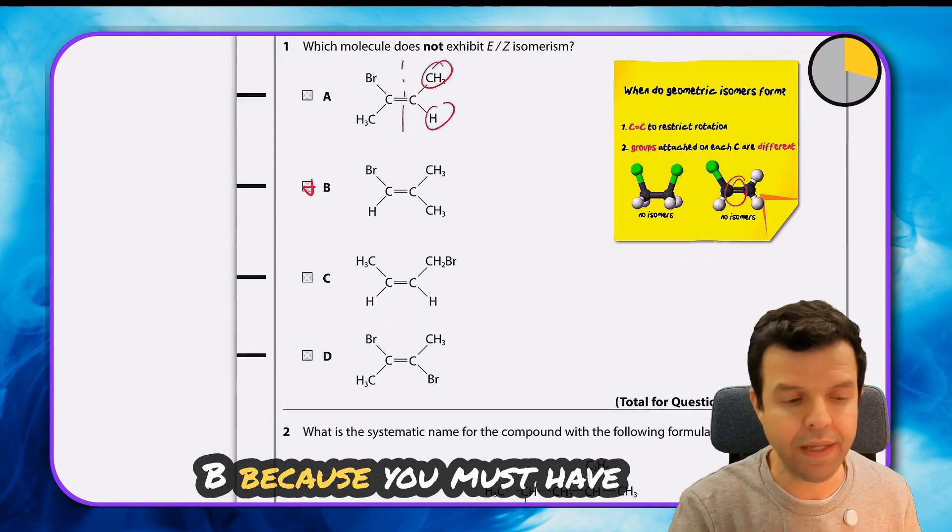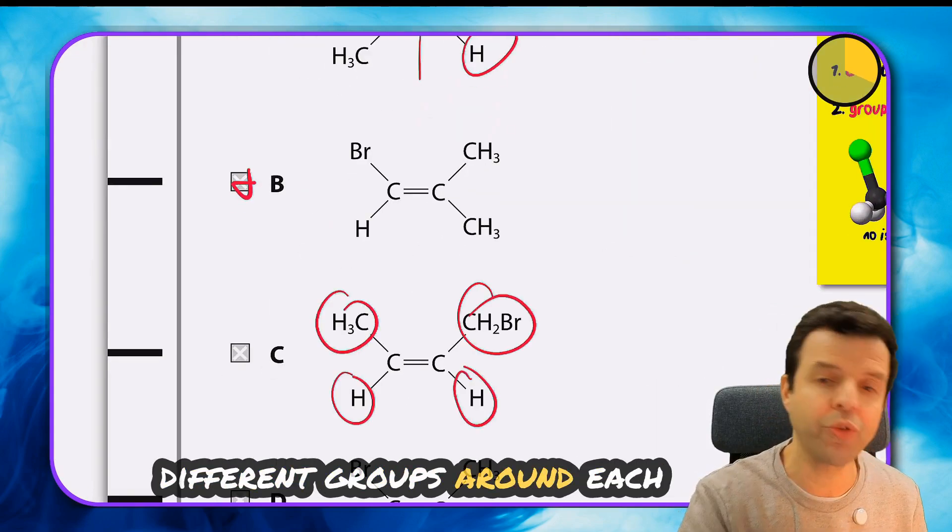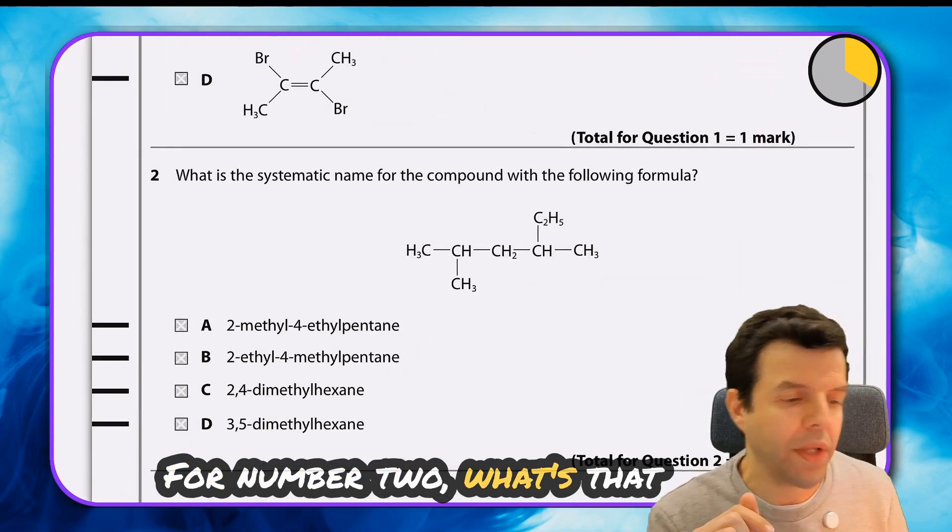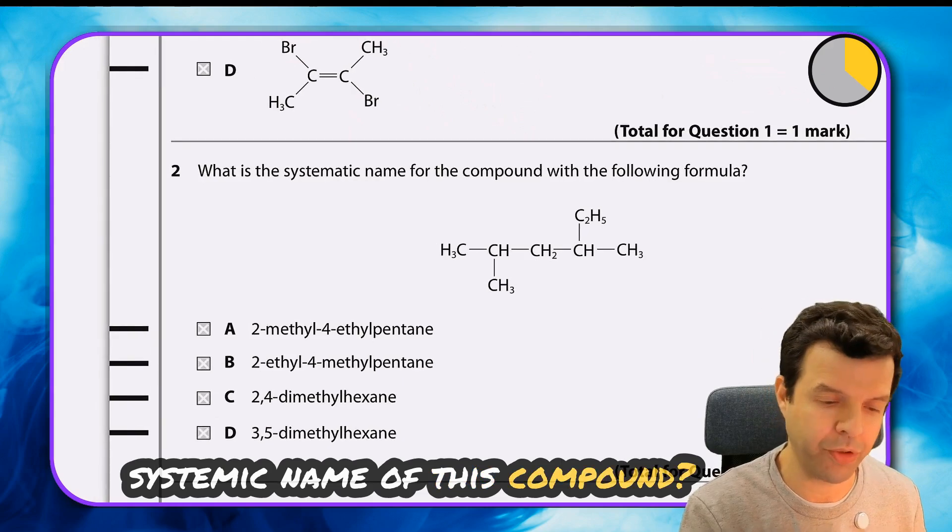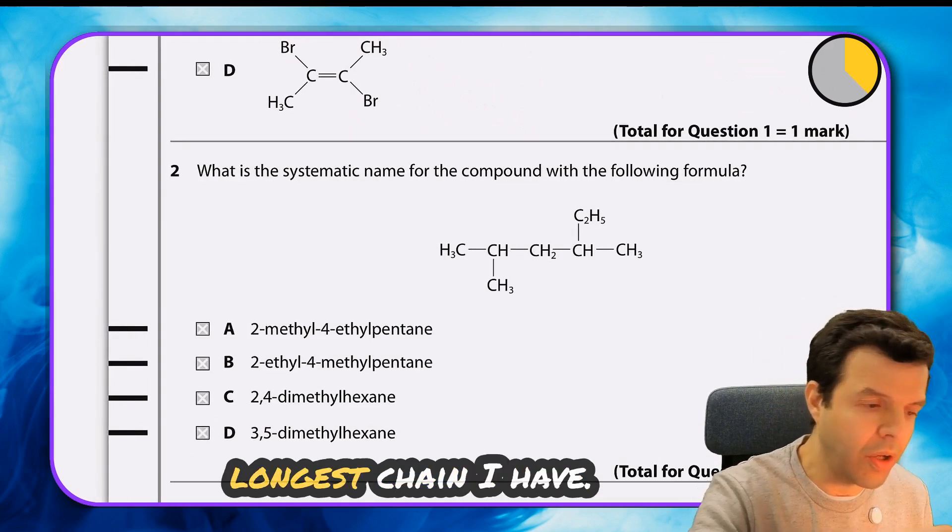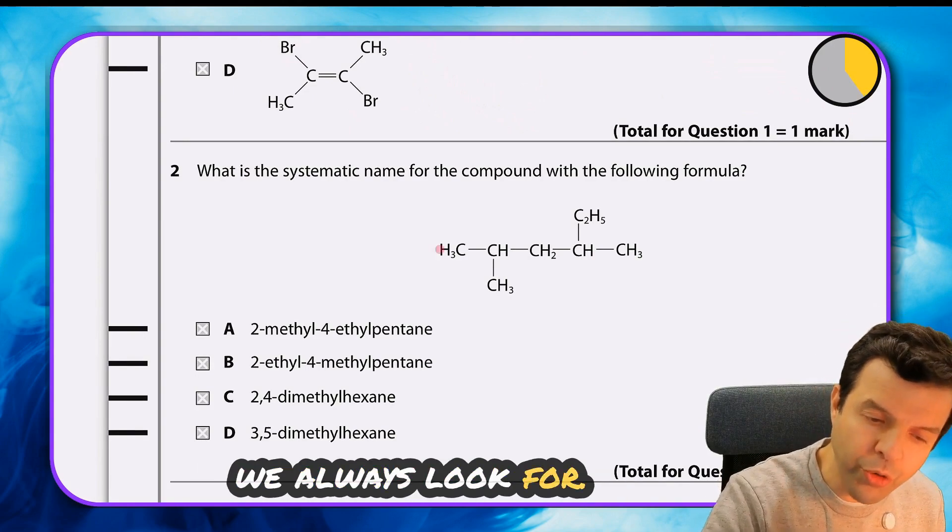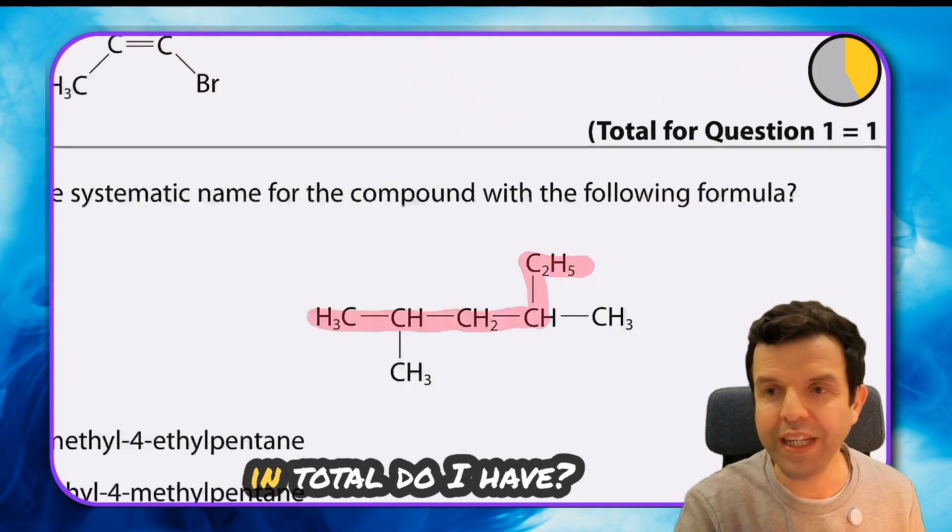That's why I picked B, because you must have different groups around each carbon in the double bond. For number two, what's the systematic name of this compound? You can see the longest chain I found. There are two carbons, so how many carbons in total do I have? I got one, two, three, four, five, six - that's hex.